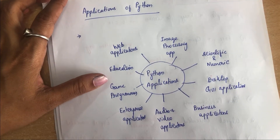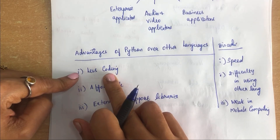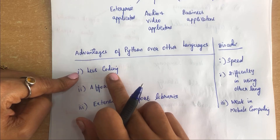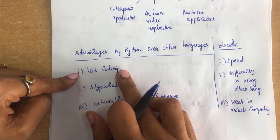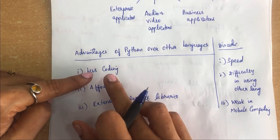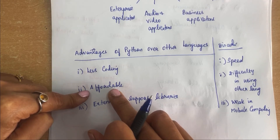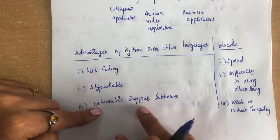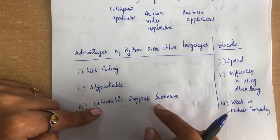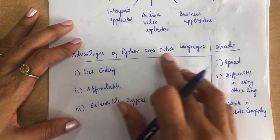Coming to the advantages of Python over other languages. First is less coding — in C and C++, you write a large number of codes, but in Python, only fewer lines of code are required. Second is affordable — Python is free and open source, so companies and programmers can download and use it without buying a license. Third is extensible support libraries — Python has a wide range of libraries for everything, making it usable for any type of application.